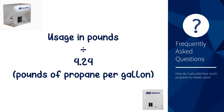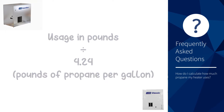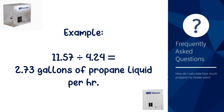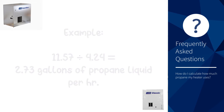To determine gallons of propane used per hour, take usage in pounds and divide by 4.24, which is the pounds of propane per gallon. So for example, the Guardian 250 — we now know it burns 11.57 pounds of gas per hour. Divide that by 4.24 and you get 2.73 gallons of propane liquid per hour.